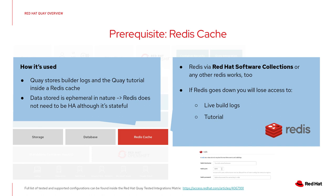Redis cache is a third stateful component, but it's less critical compared with the database and storage backend. It's primarily used to store builder logs and build tutorials. You need to decide whether it needs to be HA or not. Typically it's not done in an HA fashion because the risk of Redis going down is pretty low and the associated risk is also low.